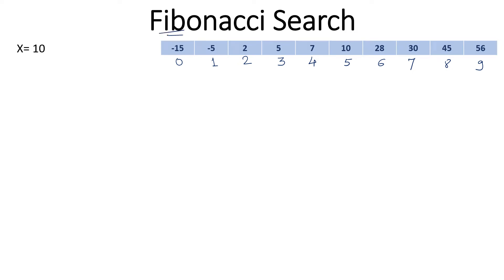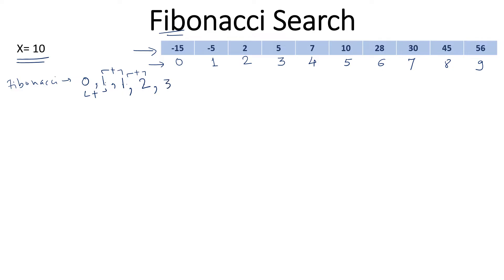You're going to see Fibonacci search here. Fibonacci search is based on the Fibonacci series of numbers. The primary condition for applying Fibonacci search is that the numbers have to be in sorted order. Fibonacci series starts with 0 and 1; the next number is computed by adding the previous two numbers, so 0 plus 1 is 1, then 1 plus 1 is 2, then 1 plus 2 is 3, and so on.